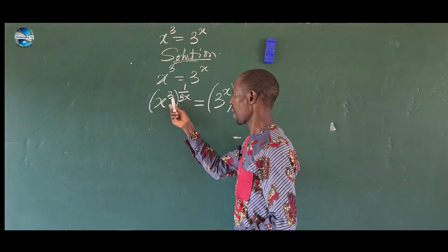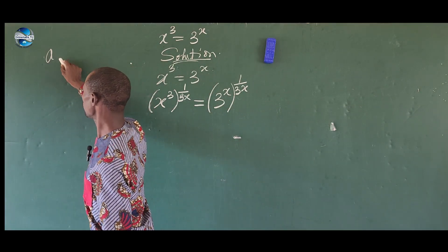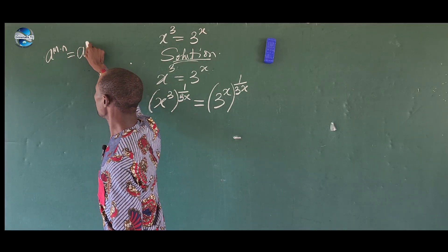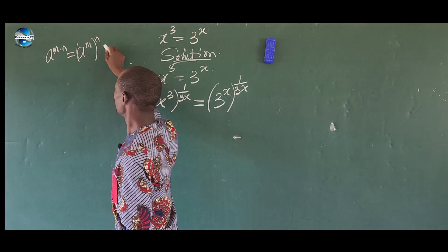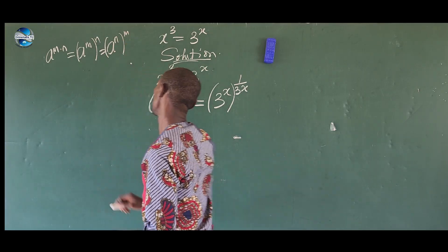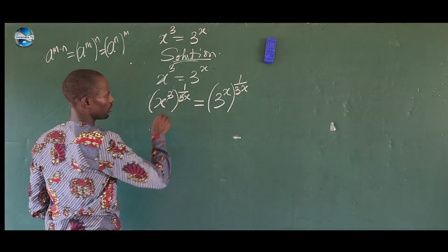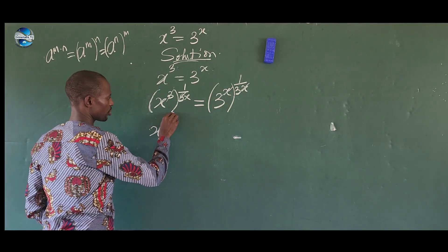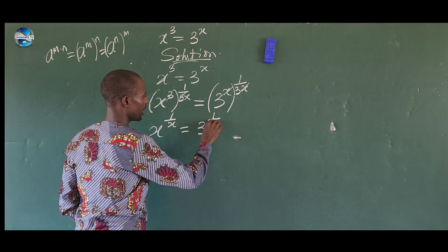We apply a rule in indices which says a^(m×n) can be written as (a^m)^n, or equivalently a^(n) raised to m. Applying this, the 3 cancels with the 3 and the x cancels with the x, leaving us with x raised to the power of 1/x equal to 3 raised to the power of 1/3.